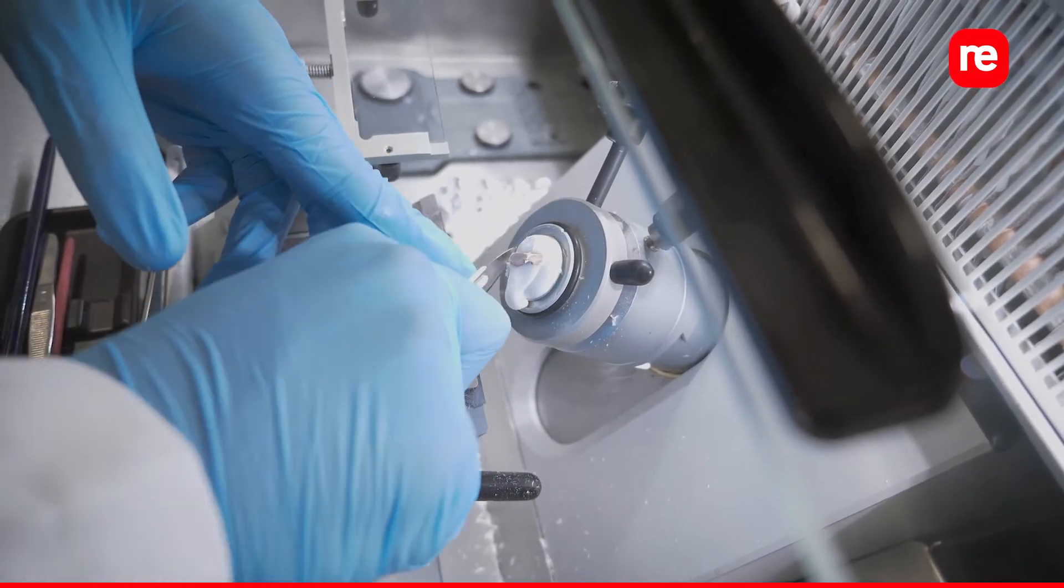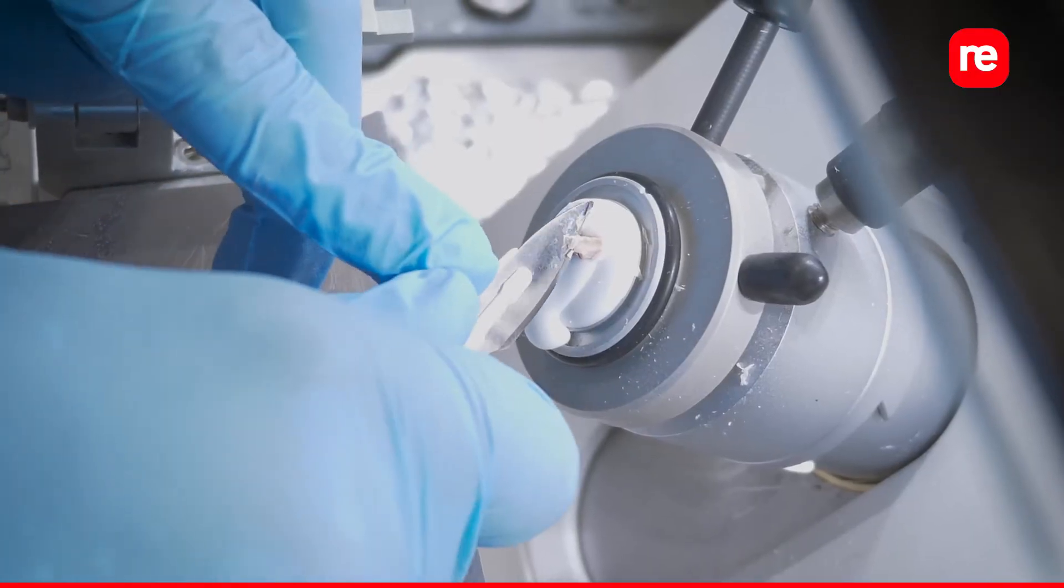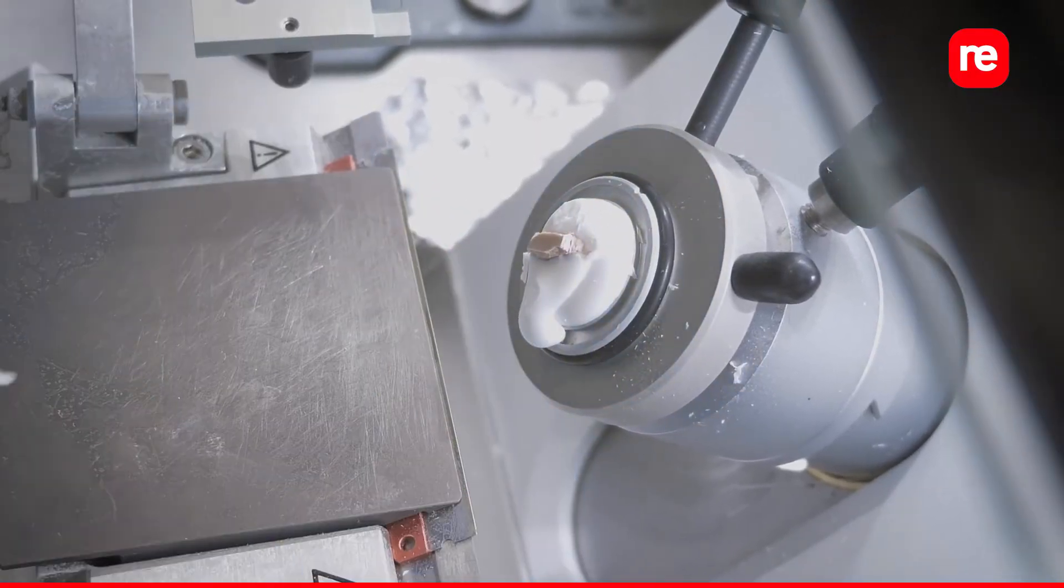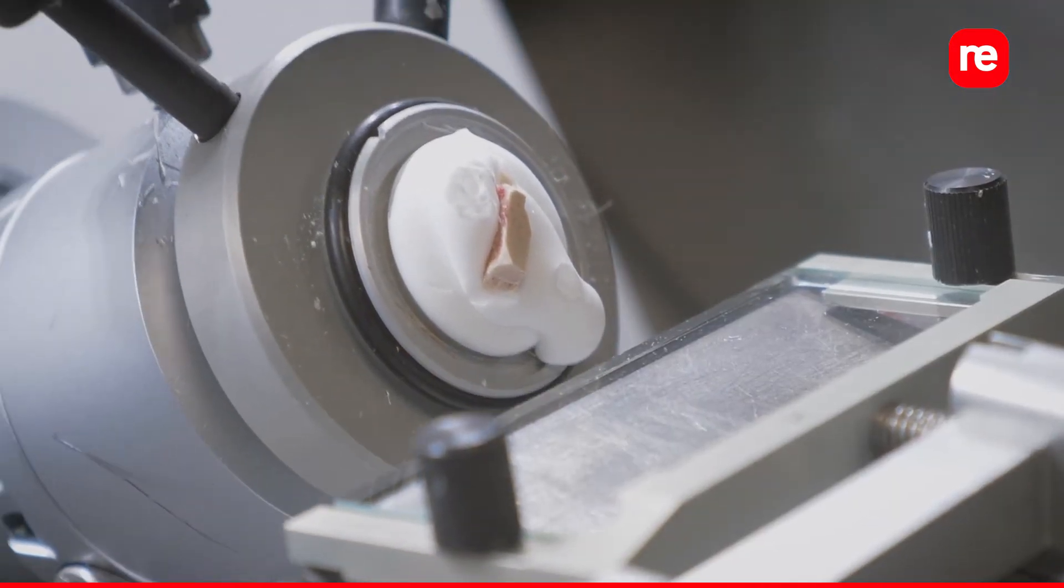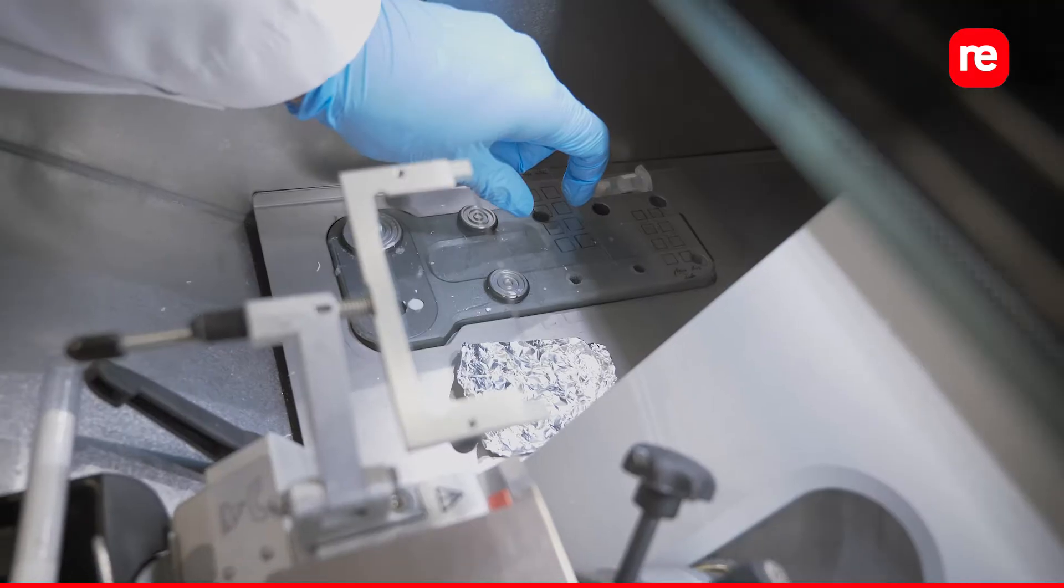Alternatively, you can trim the tissue block to the appropriate size using the scalpel. When doing so, make sure to retract the tissue slightly before making a new section to prevent tissue distortion.